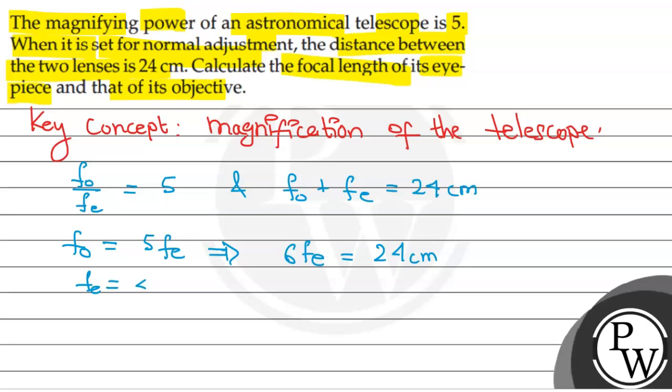f_e is equal to 4 cm, and f_o is equal to 20 cm.